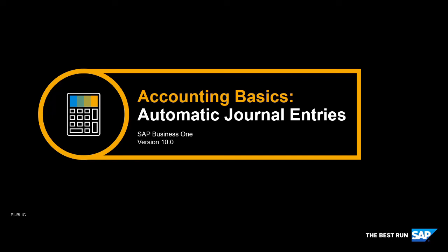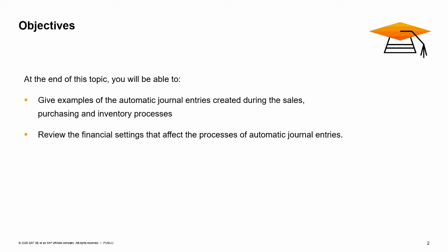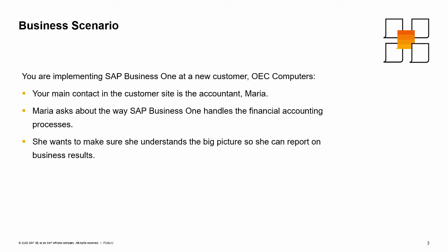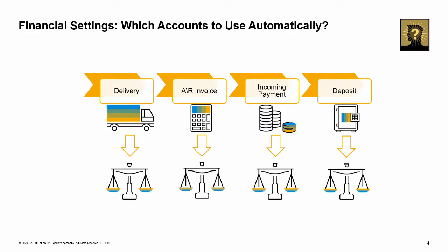Welcome to the Automatic Journal Entries topic. In this topic, we will give examples of the Automatic Journal Entries that are created during the sales, purchasing, and inventory processes. We will also talk about some financial settings that affect these Automatic Journal Entries. Imagine that you are implementing SAP Business One at a new customer, OEC Computers. Your main contact is the OEC Computers accountant, Maria. Maria is very interested in the implementation and asks you about how SAP Business One handles the financial accounting process. She wants to make sure she understands the big picture so she can report business results to the company owners each period. Let us review the necessary financial settings and how they affect the Journal Entries that are automatically posted by documents.